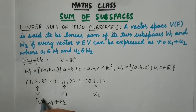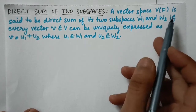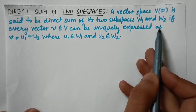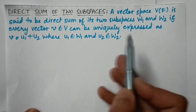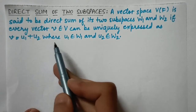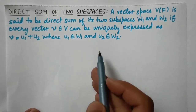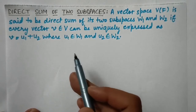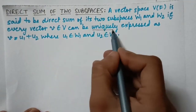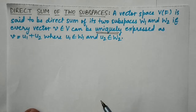Now let's move on to the definition of direct sum of two subspaces. A vector space V over the field F is said to be the direct sum of its two subspaces W1 and W2 if every vector v belonging to V can be uniquely expressed as v = u1 + u2, where u1 belongs to W1 and u2 belongs to W2. The only difference from the linear sum definition is the word 'uniquely'.